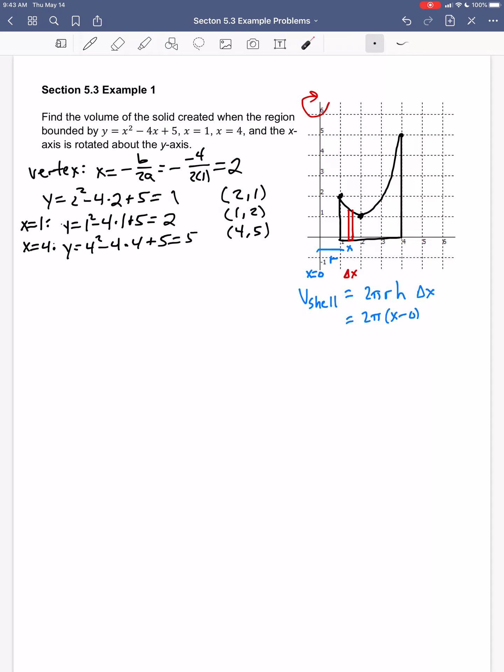The height is going to be this value here. The top is my function, x squared minus 4x plus 5, and my bottom is just y equals 0. So I take the top minus the bottom, and I'll get x squared minus 4x plus 5 minus 0.